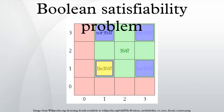In contrast, the CNF formula 'a AND NOT a', consisting of two clauses of one literal each, is unsatisfiable, since for a equals true and a equals false it evaluates to true and false respectively.